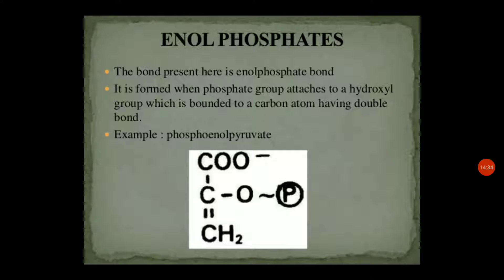An example for enol phosphate is phosphoenol pyruvate, also known as PEP. You may already know phosphoenol pyruvate from biochemistry or microbial metabolism class — it is an important compound from glycolysis. So enol phosphate consists of an enol phosphate high energy bond, formed by attachment of phosphate to a carbon atom containing a hydroxyl group, which also contains a double bond. The example is PEP from glycolysis.